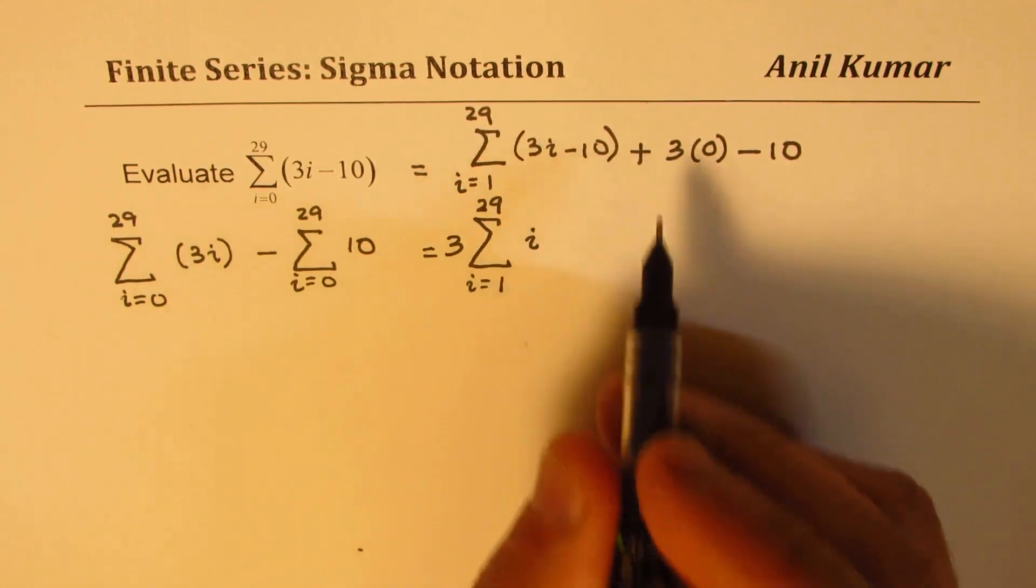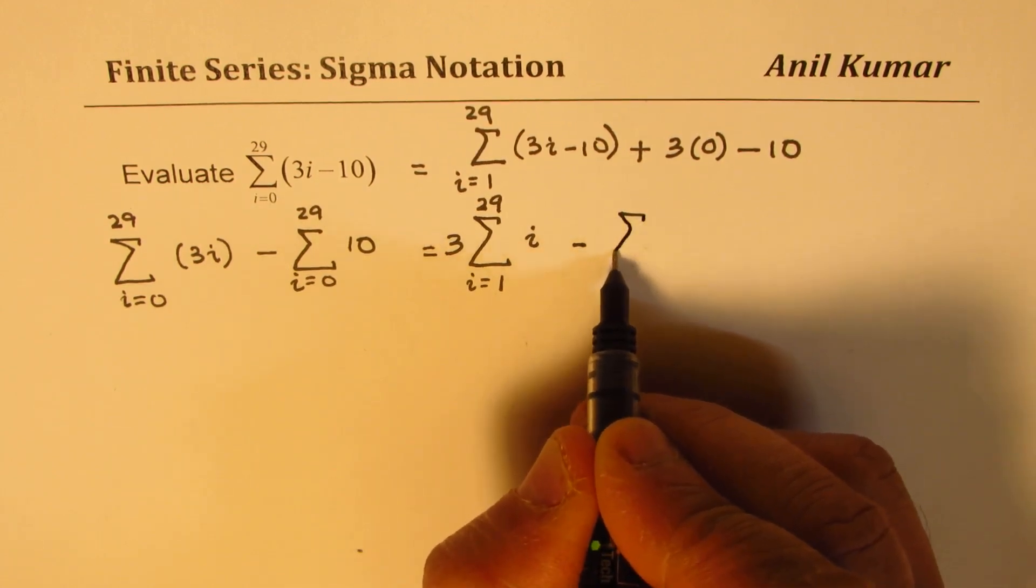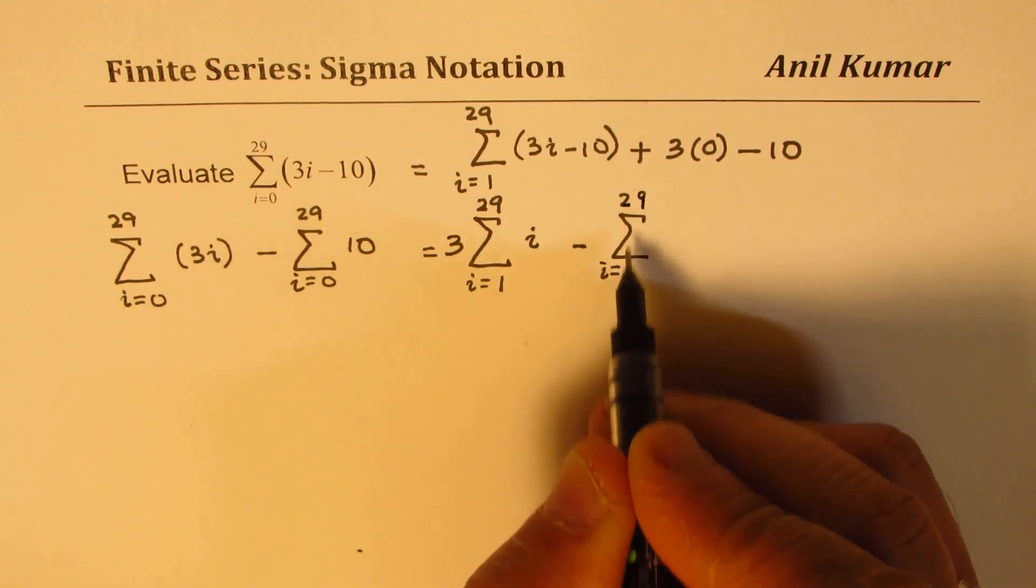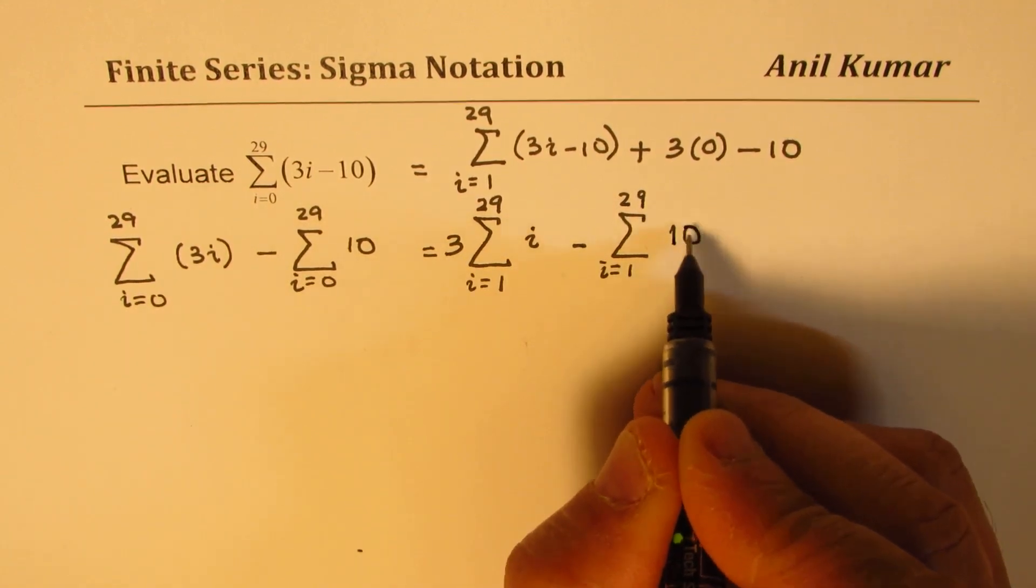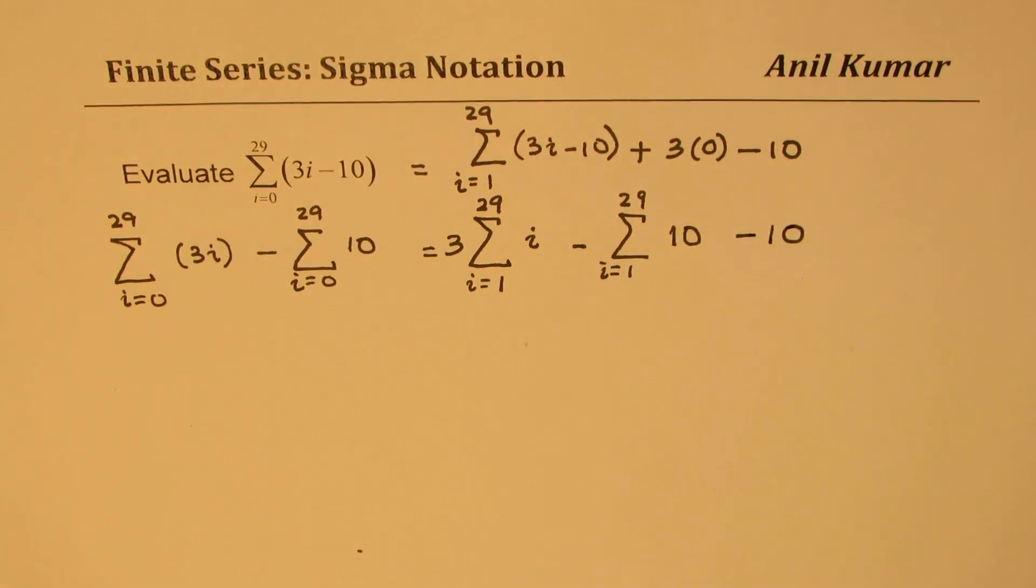Then I will take away i equals to 1 to 29. So they become 29 tens, and here is your 30th 10. You see that part. So when you think in this fashion, it becomes much simpler, I suppose.